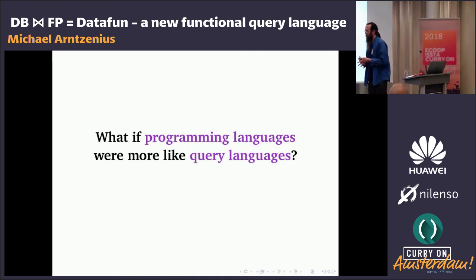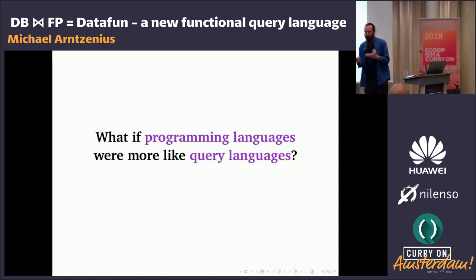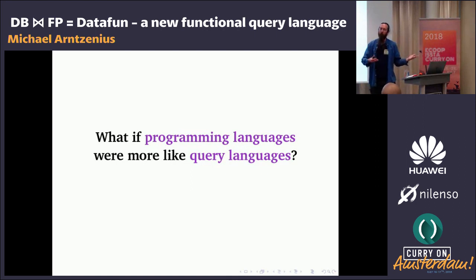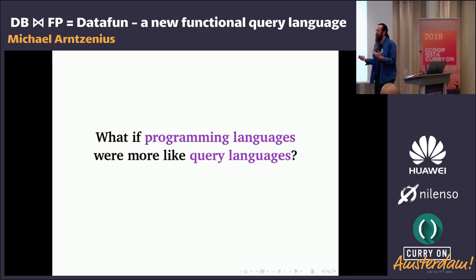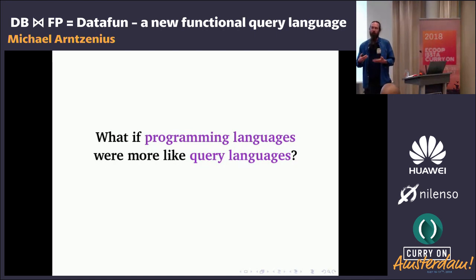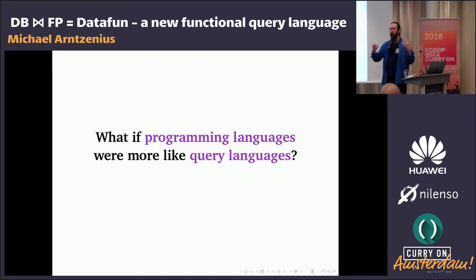In my experience, the tools we have to reduce this friction — object relational mapping, for example — often end up introducing just as much friction as they solve. I think this is really disappointing, because when I sat down and looked at query languages for the first time, coming from a functional programming tradition, they're beautiful. This mismatch doesn't have to be there if we just shift our thinking a bit. I'm hoping we can learn by taking ideas from each of these domains and mixing them with the other.